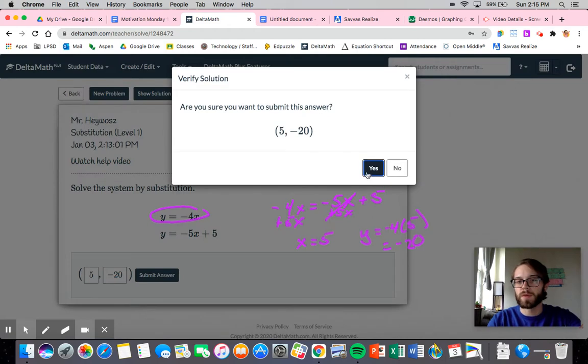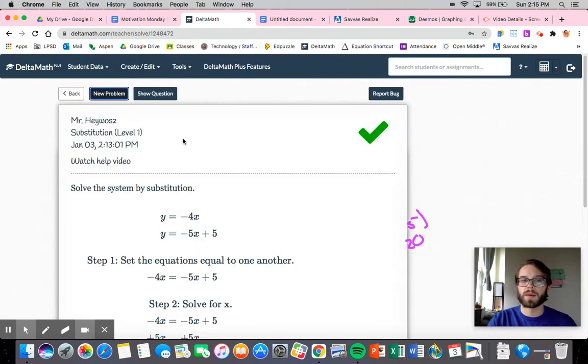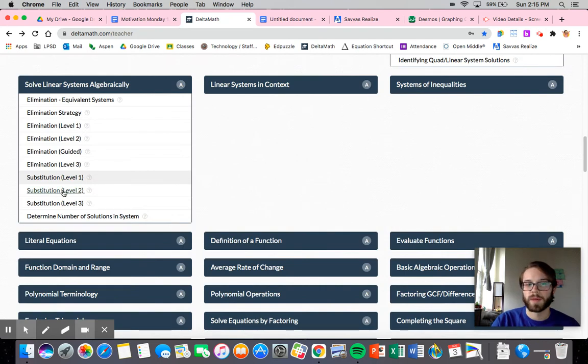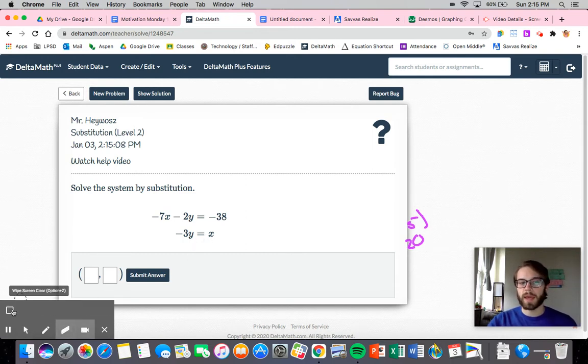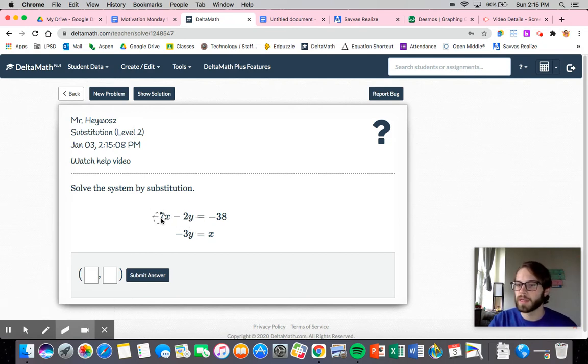Again, you could have used graphing if you so desired, but in this case, we're specifically looking for substitution. So we will continue on with that. Now, in terms of this kind of next level, we have one equation, this bottom one, which is in the form either y or x is equal to something else. And then we have up here in kind of a standard form.